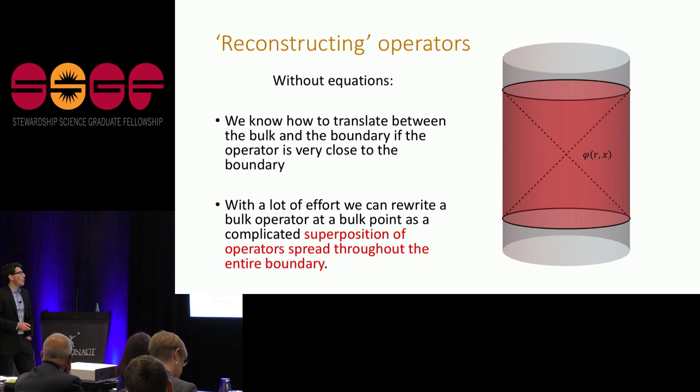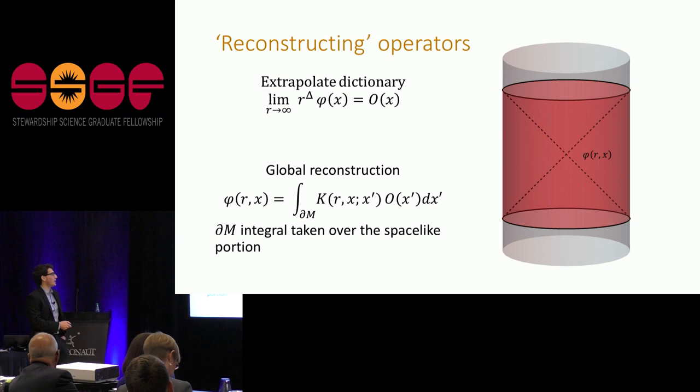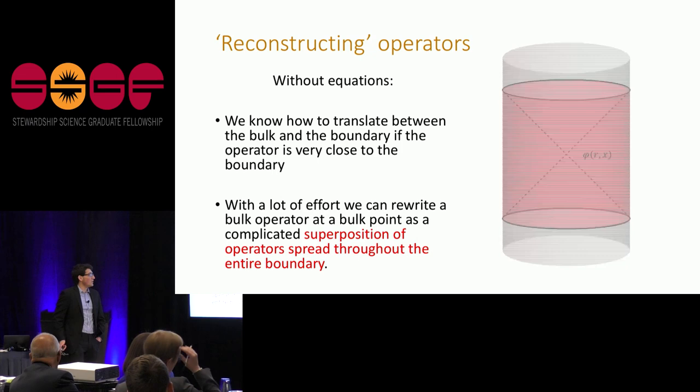So how do we bring that operator further away? So say I want to describe an operator inside here. Well, we actually figured out how to do that as well. There's a very non-local mapping. With the equation, we can imagine it's an integral. It doesn't really matter. But what it essentially says is that one local operator at some point here gets—you require the whole region of the boundary that's space-like to that point. So it would be the whole pink region is needed to describe that one point. Very non-local, of course, as well.